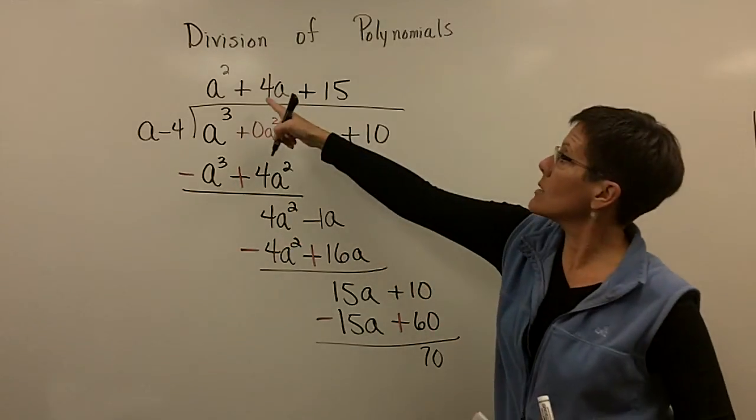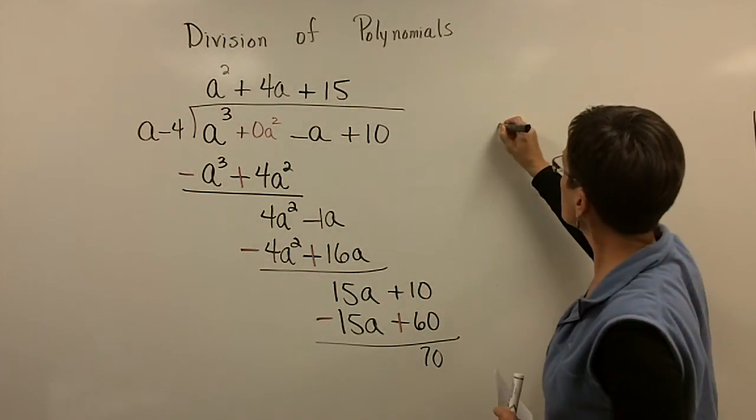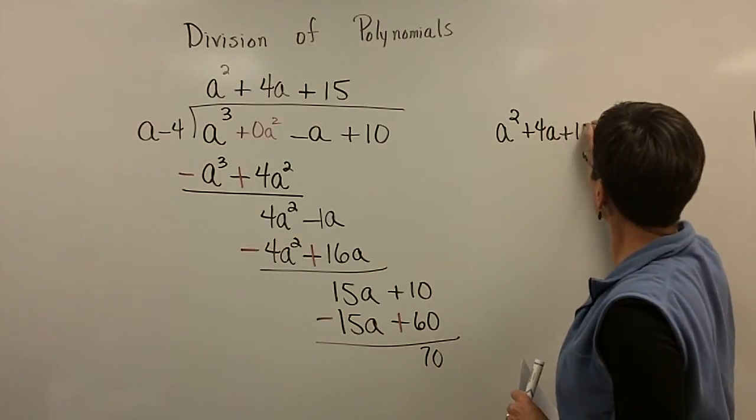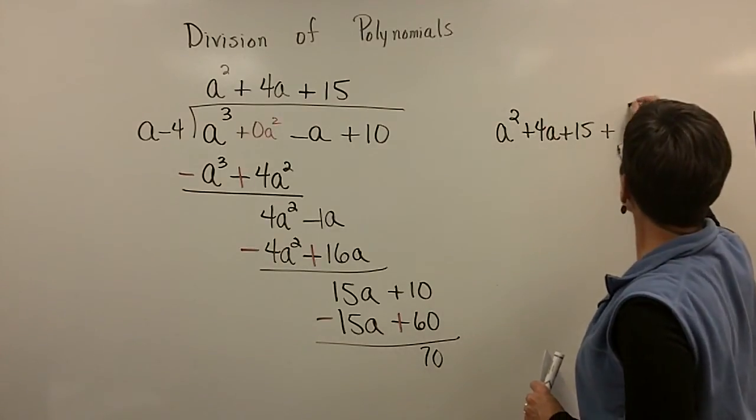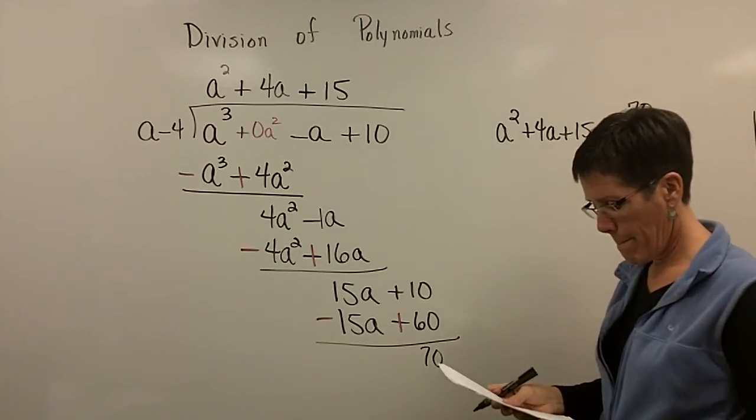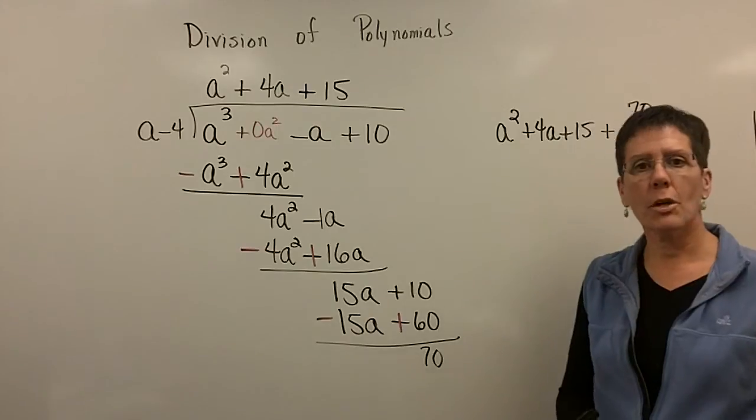So the remainder for this problem is a 70. And my answer to this problem is a squared plus 4 a plus 15 plus a remainder of 70 over the divisor of a minus 4. One more problem to share with you.